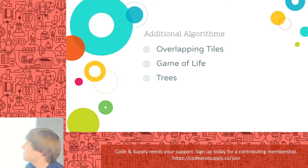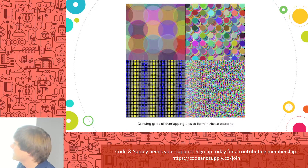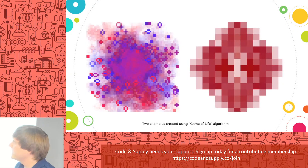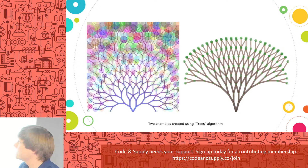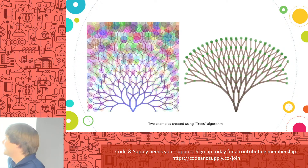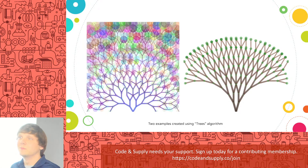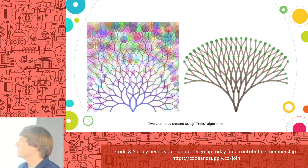I won't go through the last three algorithms in detail, but here are some images. The overlapping tiles algorithm generates some interesting images. There's one based on Conway's Game of Life. And here's the trees algorithm — over here we used brown and green to try to look like a real tree, though it looks a little too perfect or uniform. On the other side, we used all different colors to create a more artificial-looking tree.